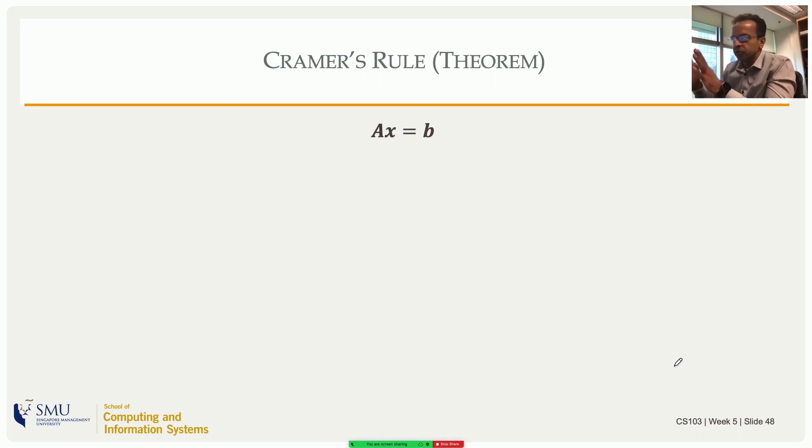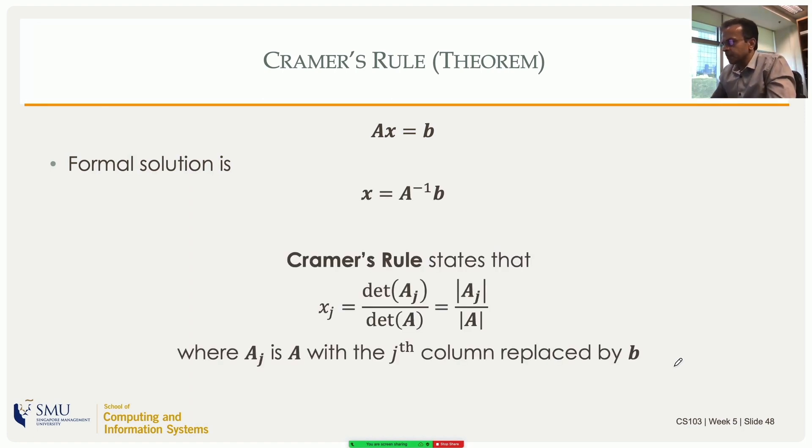Cramer's rule is a theorem, very beautiful mathematically but quite useless computationally. The formal solution for Ax = b is A^(-1)b, but there is Cramer's rule which will give you each element of the solution x, which reads the determinant of Aj by determinant of A.